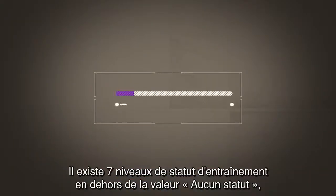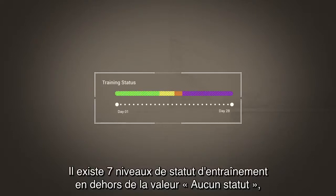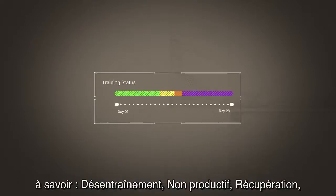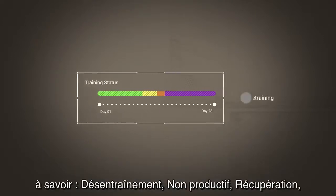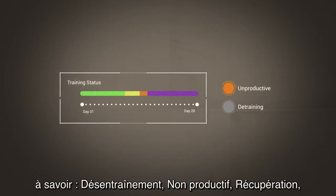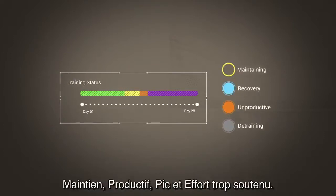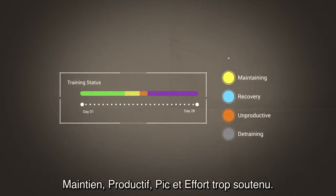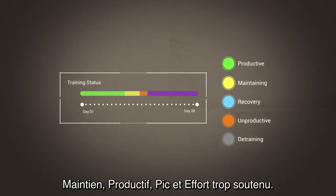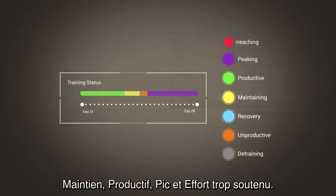There are seven training status levels in addition to no status. These are detraining, unproductive, recovery, maintaining, productive, peaking, and overreaching.